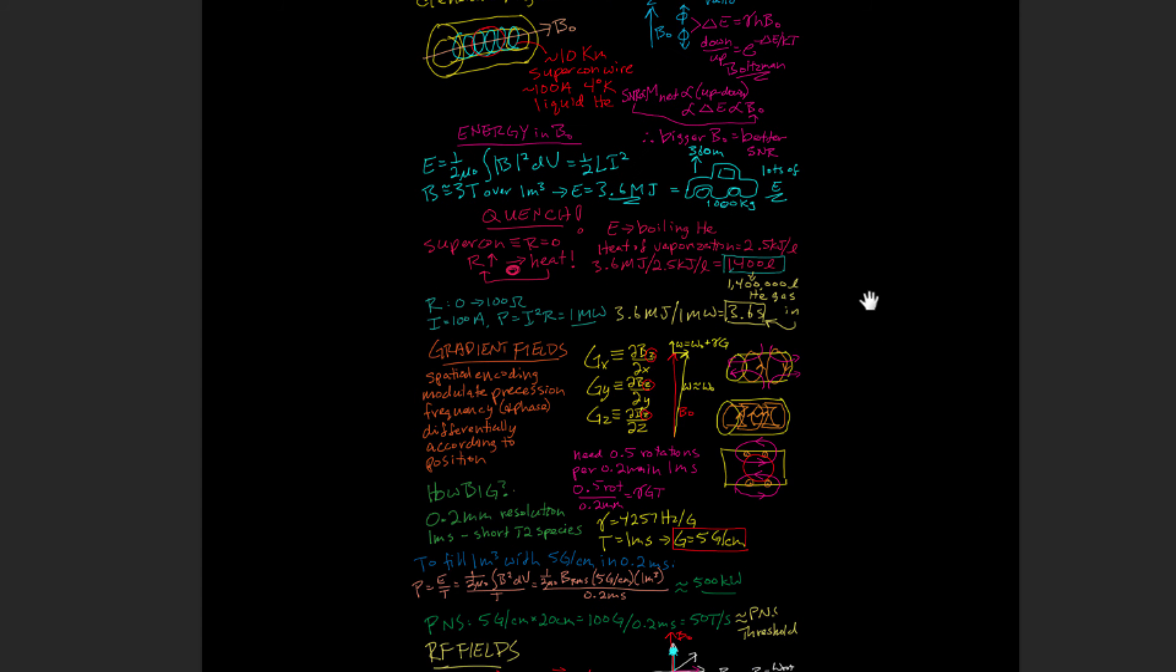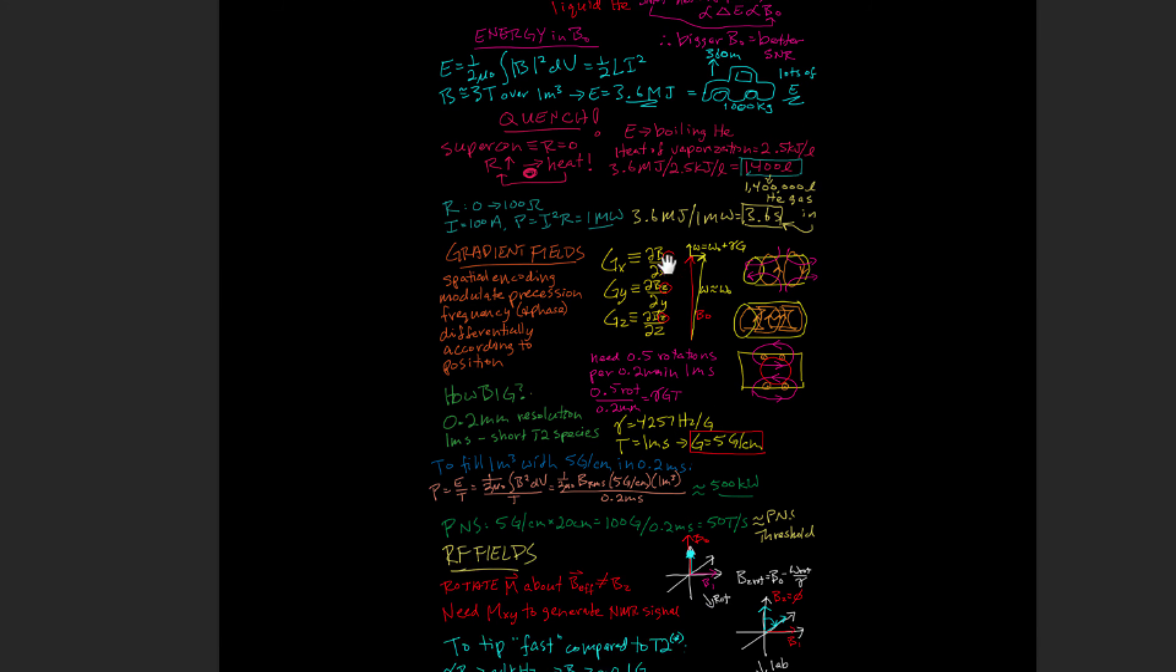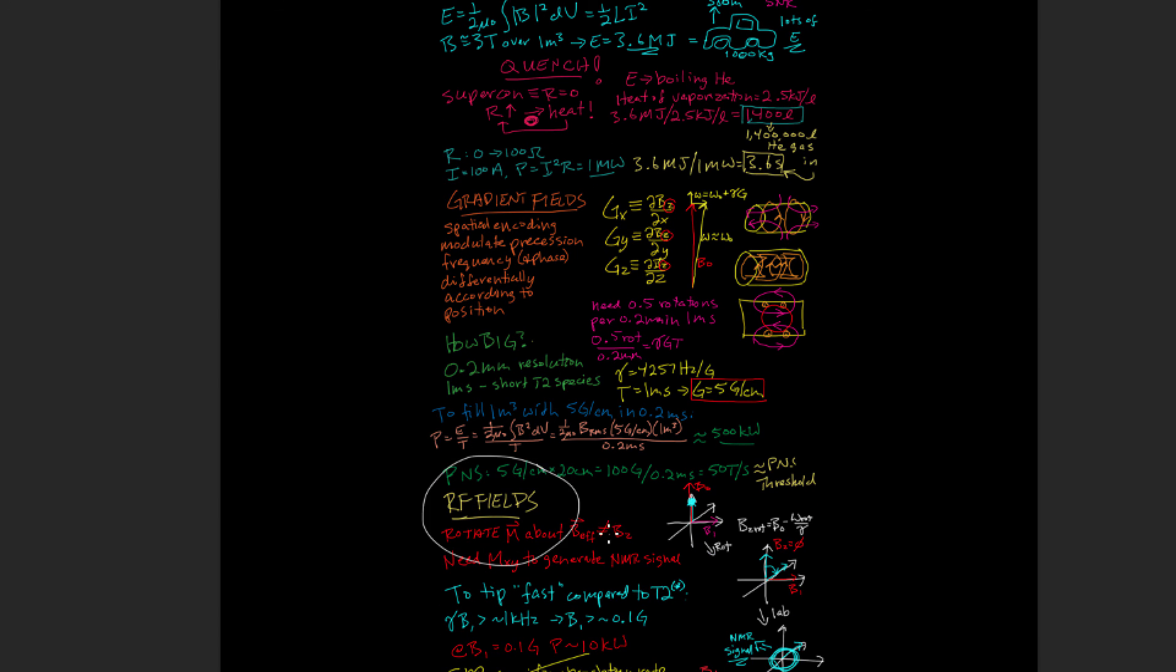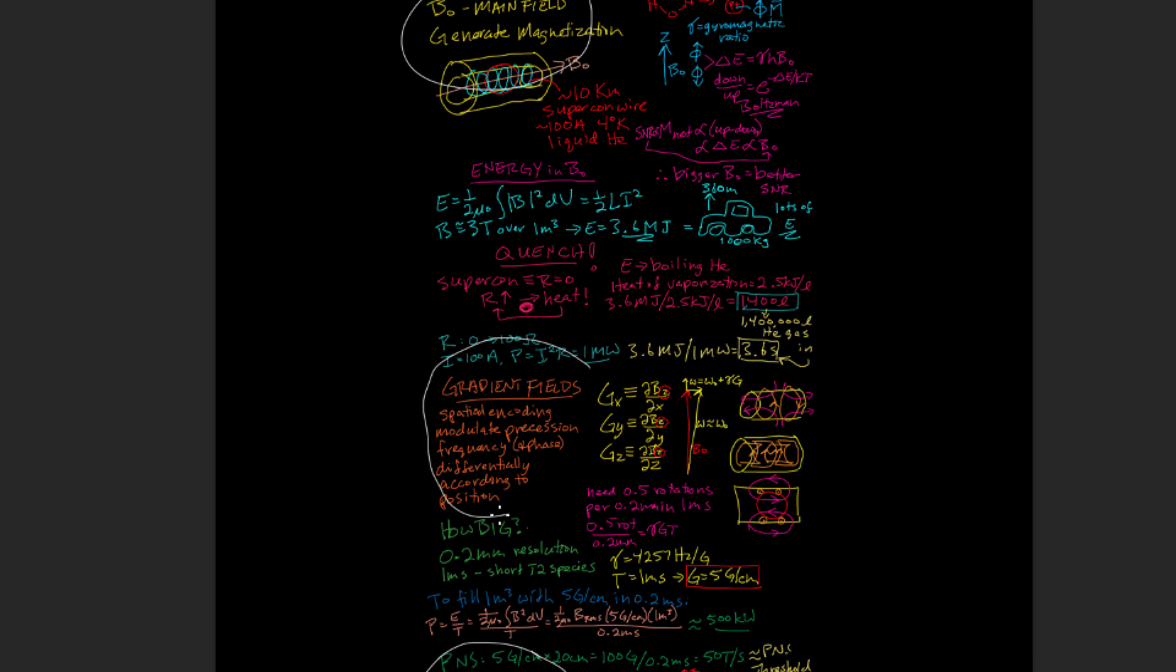Okay, so this has been an overview of the three field generating components of a magnetic resonance imaging system. The main field to generate magnetization, the RF fields to convert that into visible transverse magnetization, and the gradient fields to provide spatial encoding.